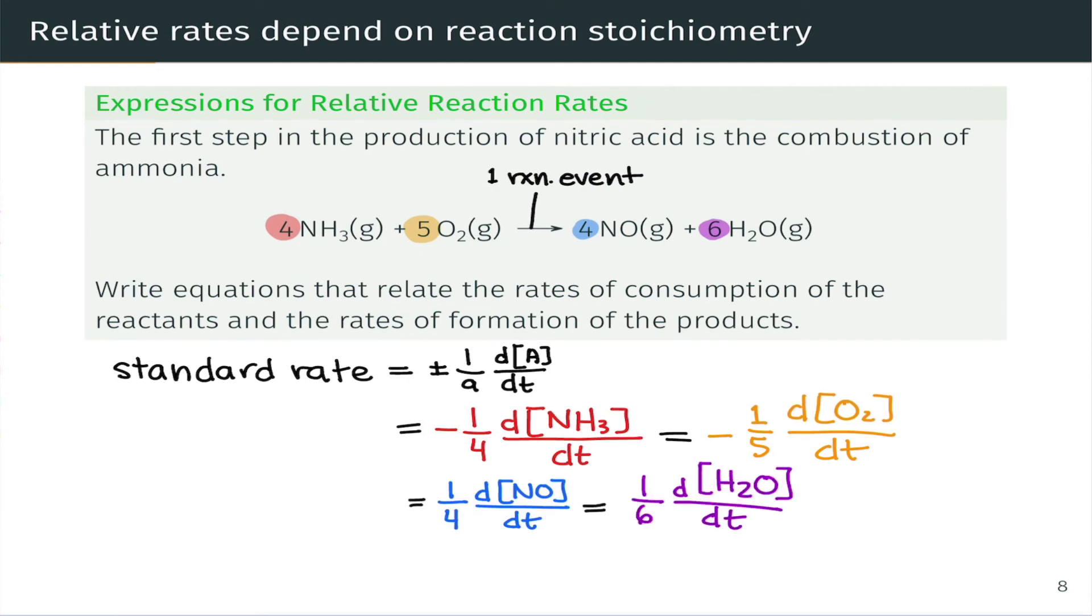And analogously for the other two species, one fourth dNO dt and one sixth dH2O dt. And we can verify conceptually and mathematically that all four of these expressions are equal to each other, and they're all equal to the rate of reaction occurrences or reaction events.